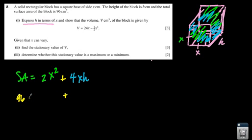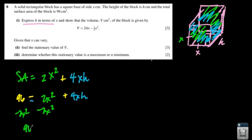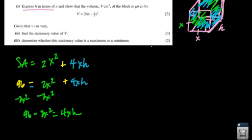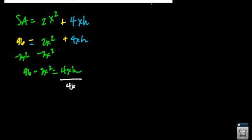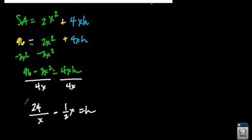I'm going to substitute 96 in for the surface area and then isolate h. Starting by moving 2x squared to the other side, then dividing by 4x. That gives h = 24/x minus x/2, because 96 divided by 4x is 24/x, and 2 divided by 4 is one-half, and x squared divided by x is x.